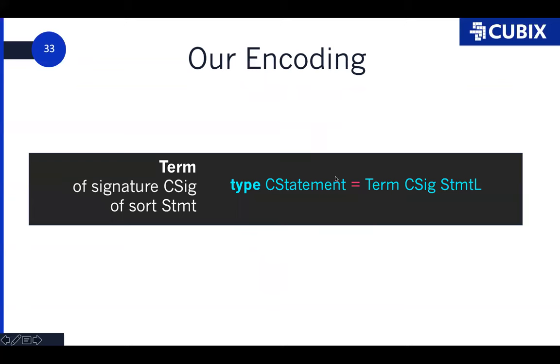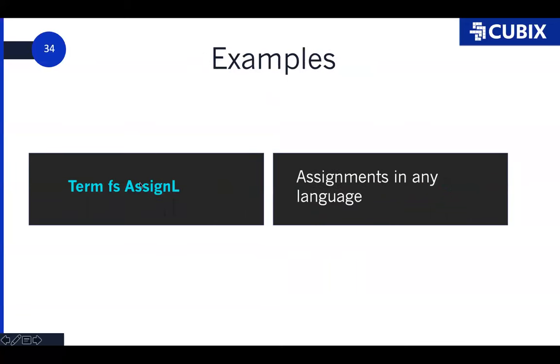So we directly build off the Swierstra Heiveld 2011 encoding in Cubix. So this is what terms look like in Cubix. So if you want a C statement for writing the language to the code, you say a term of signature CSig, that's the list of possible nodes in C, a sort statement. But you add some variables and it gets more generic. So I have a concrete sort, AssignL. I turn the signature into a parameter. Now I have assignments in any language. And go the other way. Term MJavaSig L. This is Java terms of any sort.